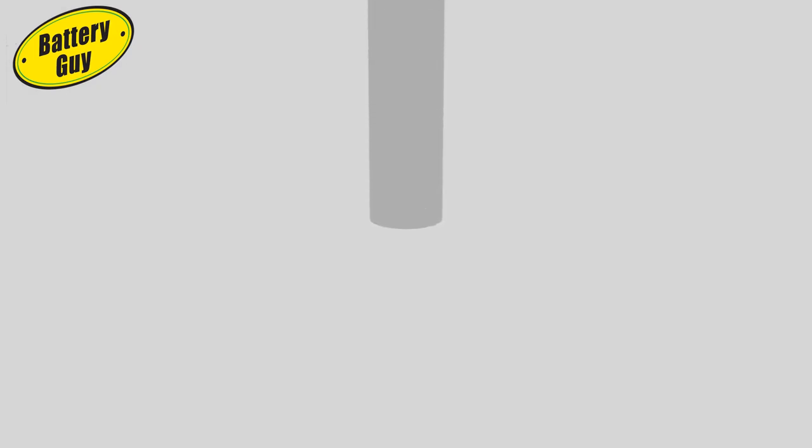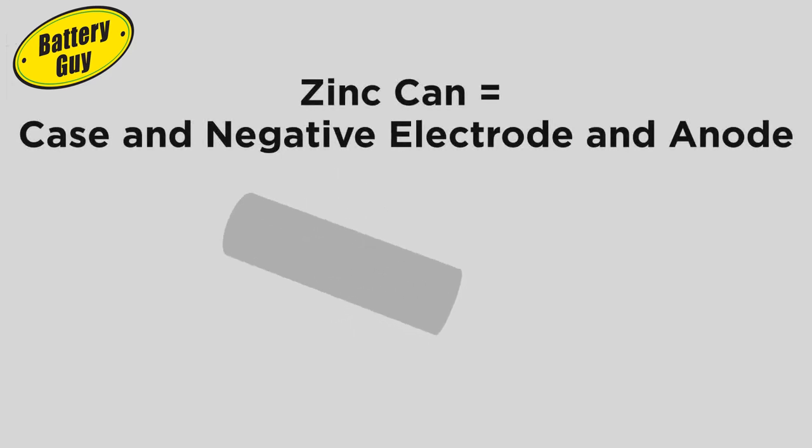The process starts with an empty zinc can, which is both the case, the negative anode and the negative electrode.